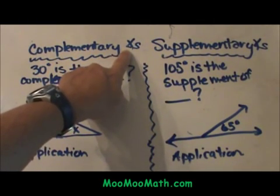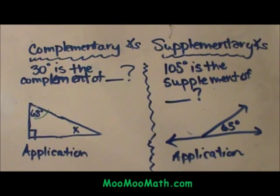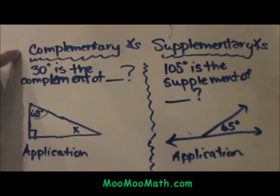This little symbol is the symbol for angles just so you will recognize that. Complementary angles. The definition of a complementary angle are two angles that add to 90.